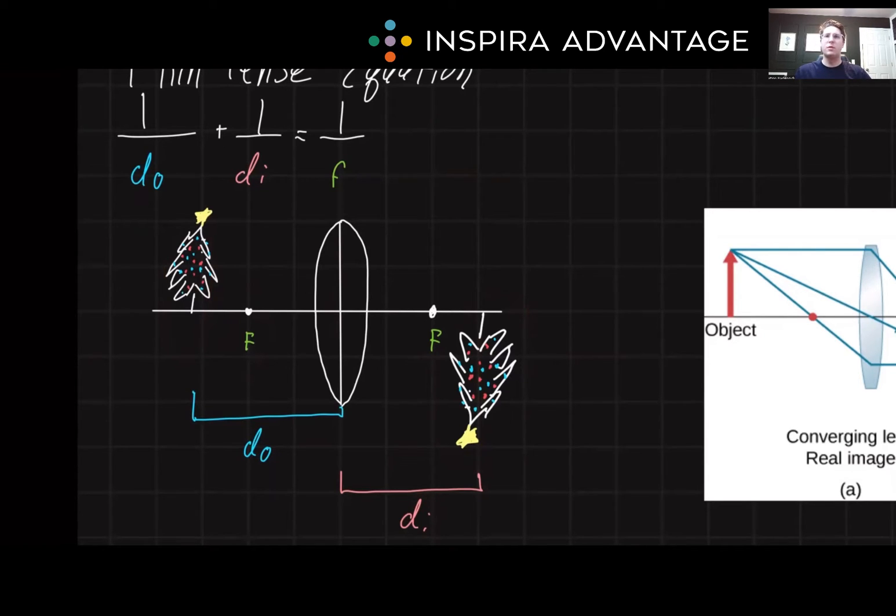Converging lenses are tricky because they can produce both real and virtual images, while diverging lenses only produce virtual images. This is something you will want in your Anki cards 100%. A real image is formed when light rays actually converge, while a virtual image only appears where rays only seem to diverge from.